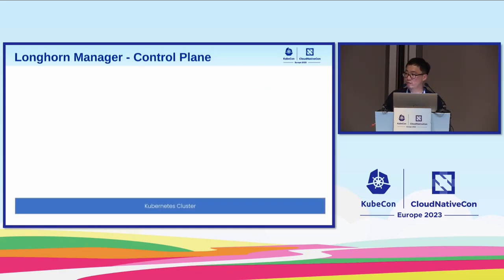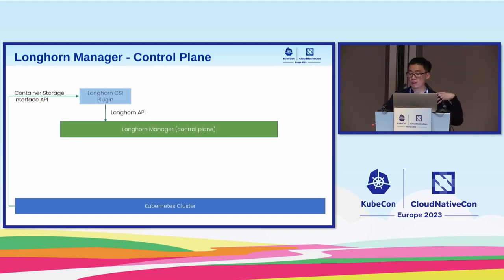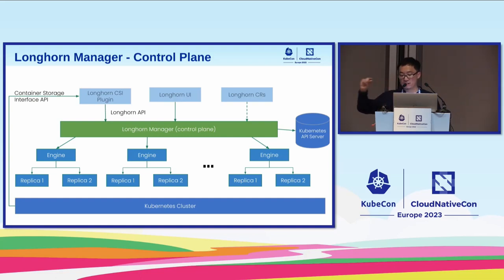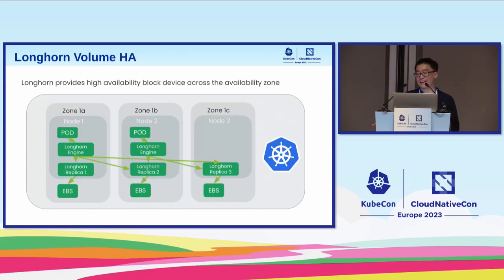For the control plane: CSI is the primary interface, especially for dynamic volume provisioning. You interact with longhorn-manager — our control plane — and all persistent state is stored in the Kubernetes API server as custom resources. Users can operate through the Longhorn UI or via Longhorn custom resources, both going through the Longhorn API and the Kubernetes admission webhook. Longhorn also has zone support, so replicas can be distributed across zones — if a zone has problems, you still have replica coverage.